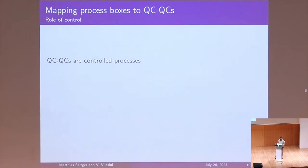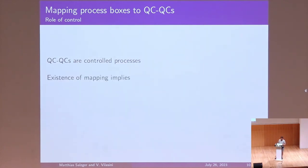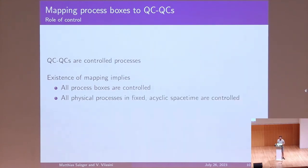For the other direction — mapping process boxes to QCQCs — this is mostly quite tedious, so I won't give an example but will explain why you might expect such a mapping to exist. The key point is that QCQCs are controlled processes — the name means quantum circuits with quantum control of causal order. If this mapping exists from process boxes to QCQCs, then all process boxes are controlled. And since we know all causal boxes are all that exist in physical fixed acyclic spacetime, we would know that all physical processes are controlled.